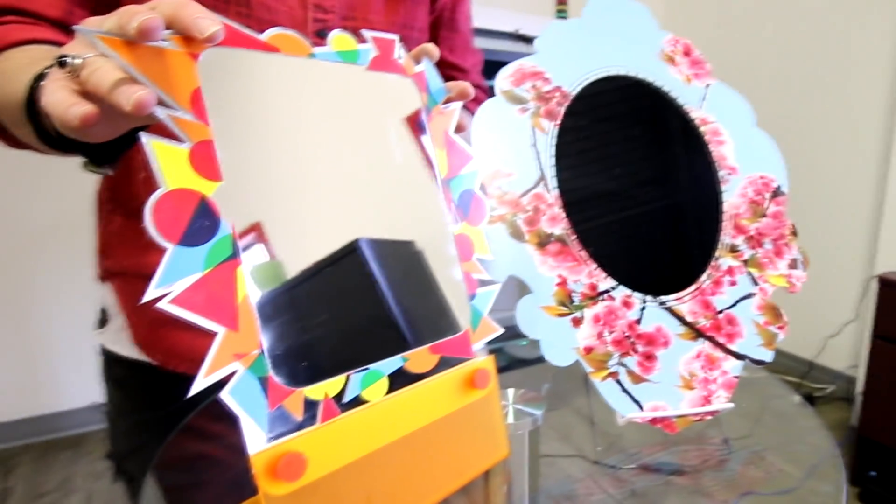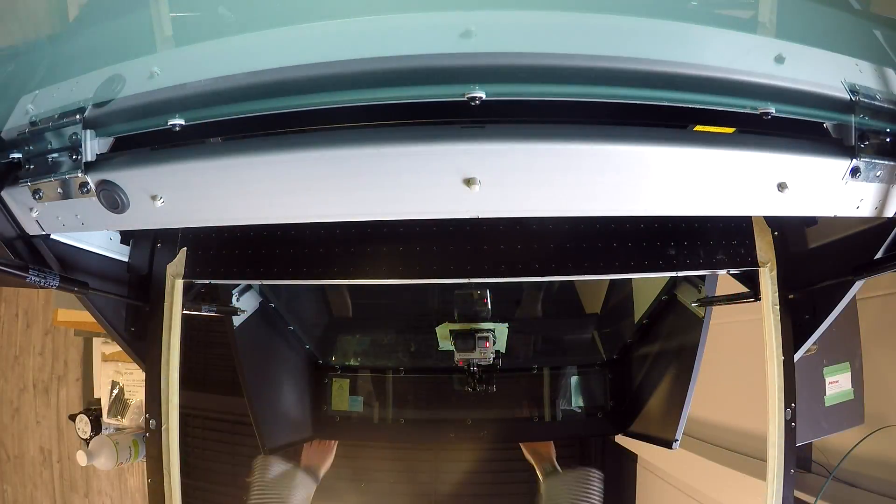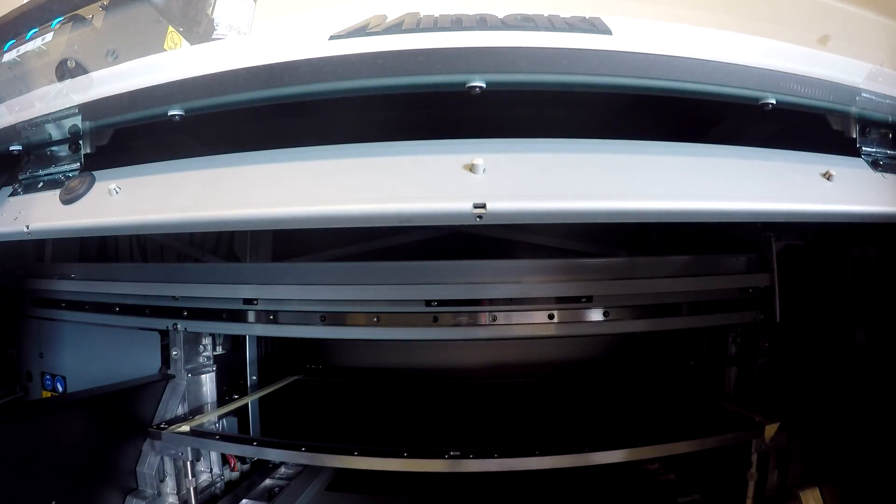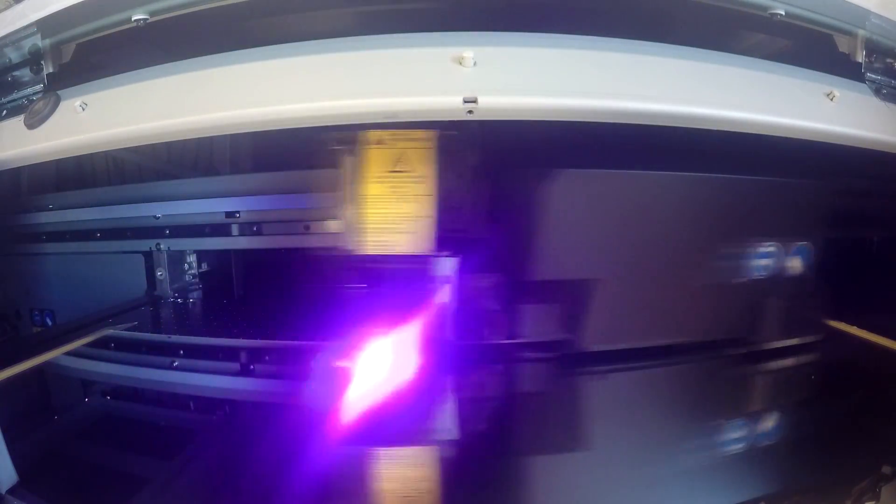Now let's take a look at our tabletop mirror. Here again we've started by placing a sheet of our TroGlass mirror into our UV Mamaki machine and printed our design as well as our registration marks.